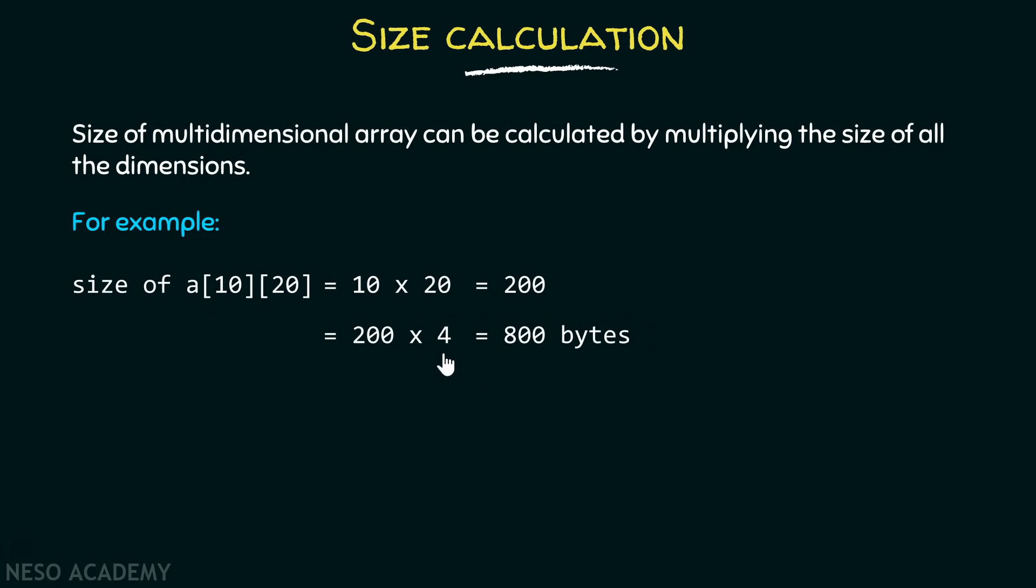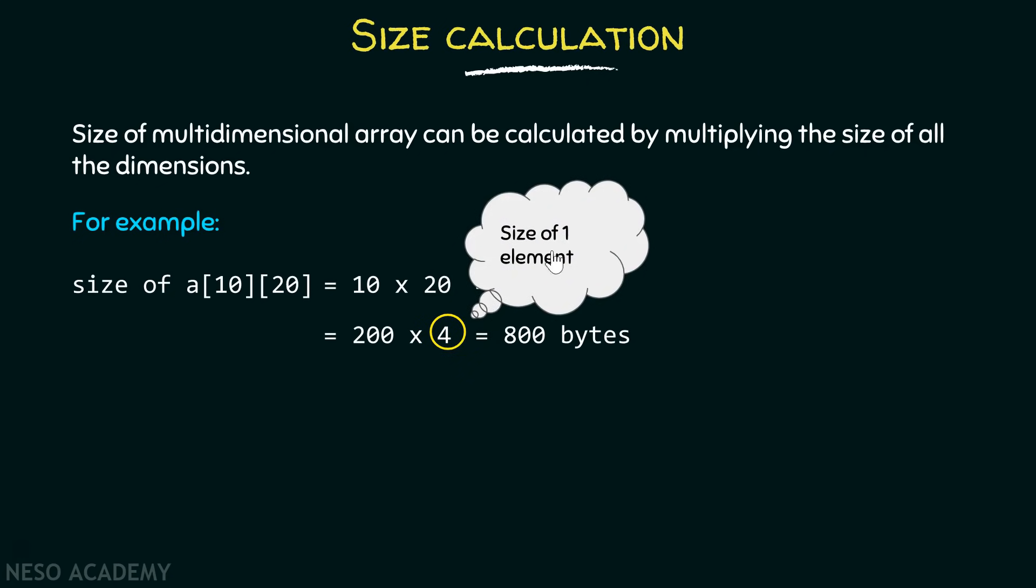But wait, what is this 4? 4 means the size of one element. 4 here depicts the size of one element. So that is why I am specifying 4 here, and multiplying 4 by the total number of elements gives me the total size which is 800 bytes.